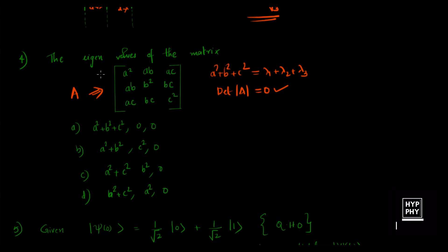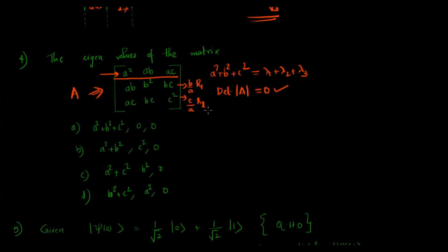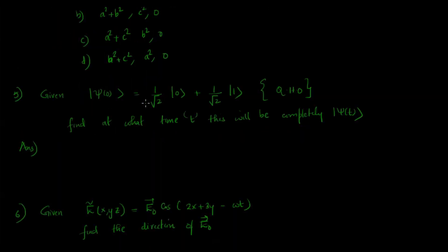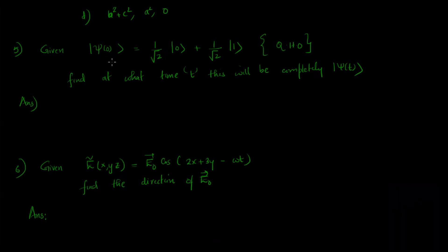The trick is: looking at the matrix, if the first row is [a², ab, ac], the second row is just (b/a) times the first row R1, and the third row is (c/a) times R1. So there are two linearly dependent rows, meaning there are two zero eigenvalues. Therefore option A — eigenvalues a² + b² + c², 0, 0 — is the correct answer.